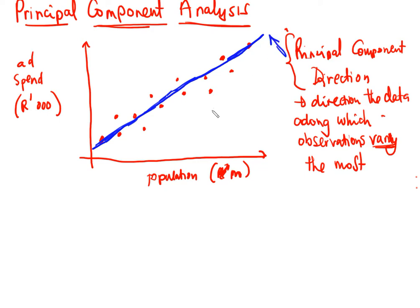This line is going to be, to be exact, called the first principal component direction. Don't worry — we're going to describe with an example how we can come up with the component directions. For now, just know the theory behind it. We can see that this is the direction where there is greatest variability in the data.